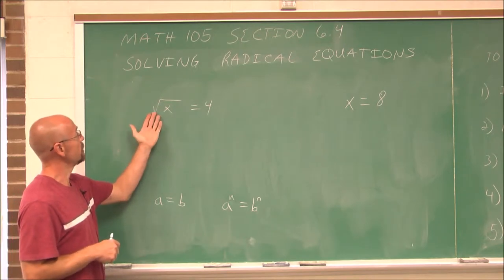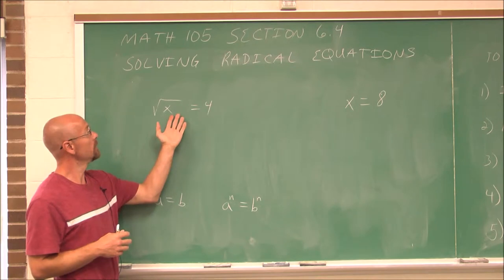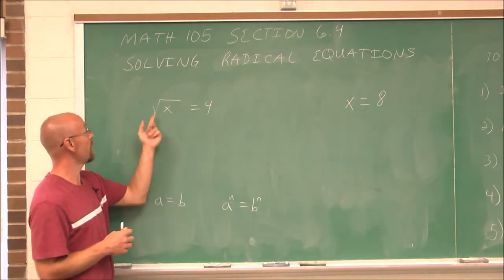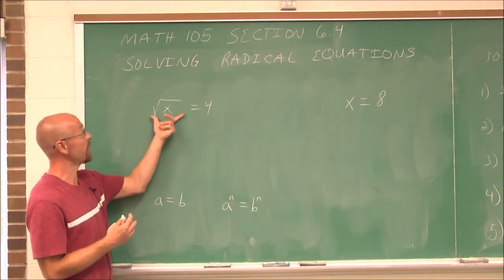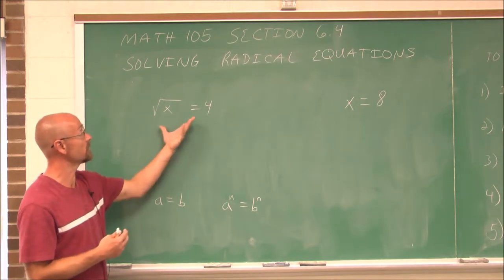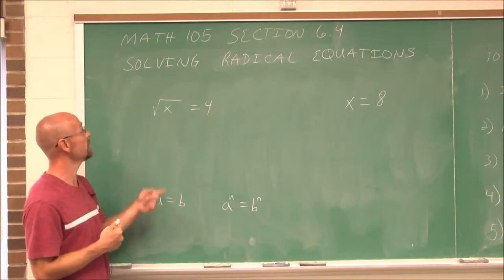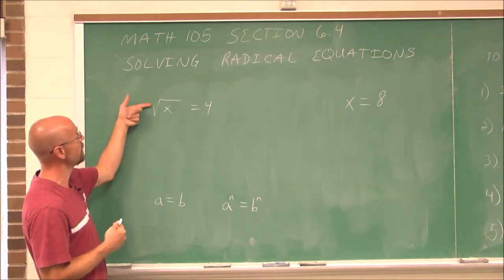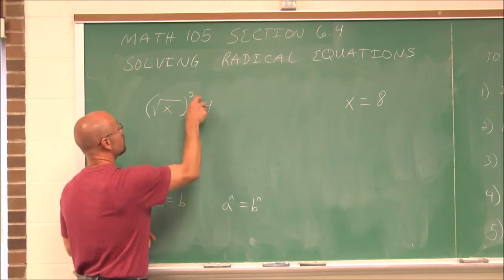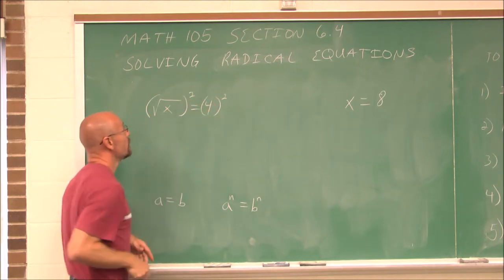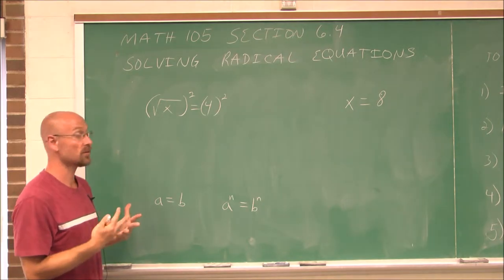Here we have a radical: the square root of x equals 4. To solve this radical, I have to isolate it to one side of the equation — in this case, it already is. Then I have to raise it to the power of the index. I identify the index to be 2, it's a square root, so I'm going to square both sides. If I square a square root, it essentially cancels.